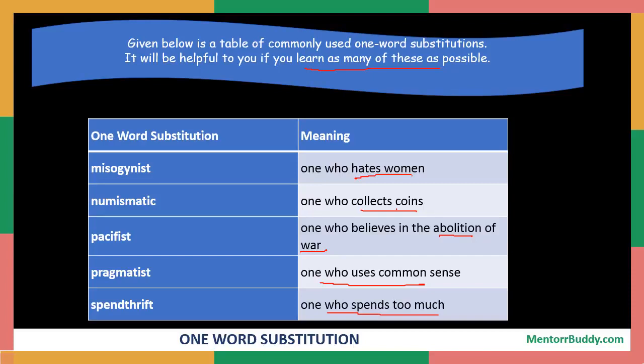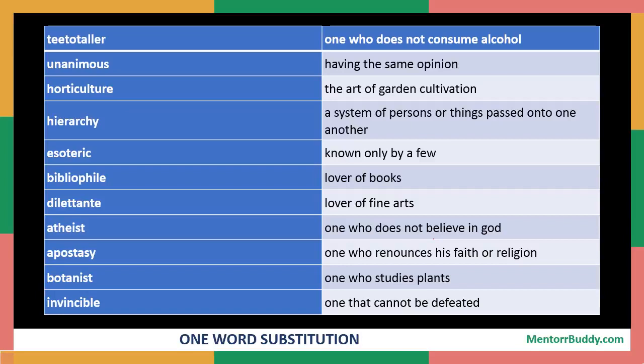Let us have a look at a few more words related with one word substitution in the next slide. The first word is 'teetotaler' — teetotaler means one who does not consume alcohol. That person is referred to as a teetotaler, and it is used as an adjective with the names of people.